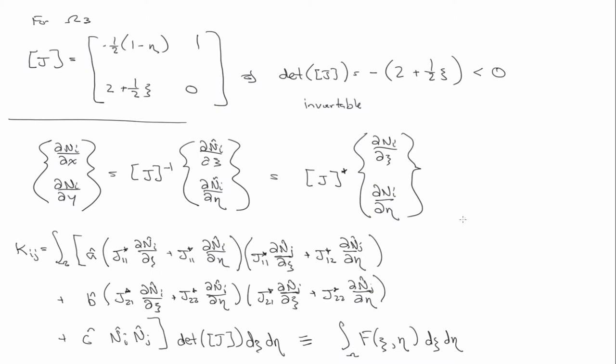Okay, and I guess I should say that a hat is equal to a of xi eta, b hat is equal to b of xi eta, c hat is equal to c of xi eta, through the coordinate transformation.